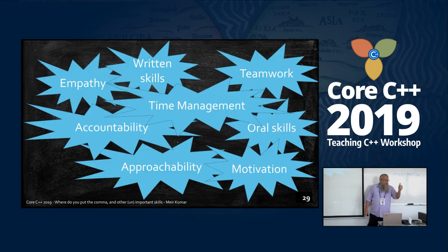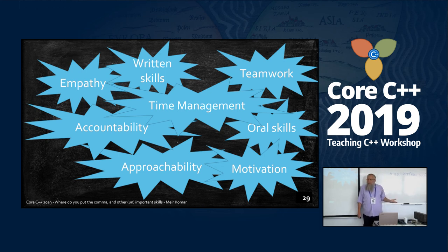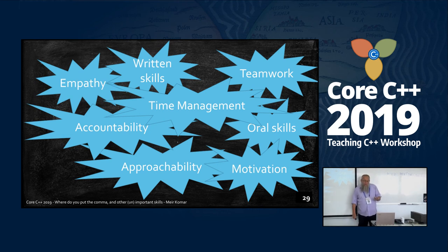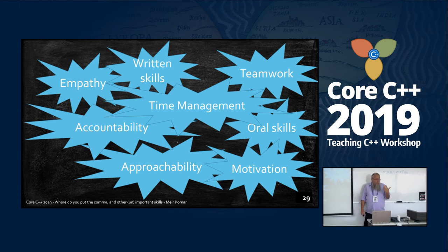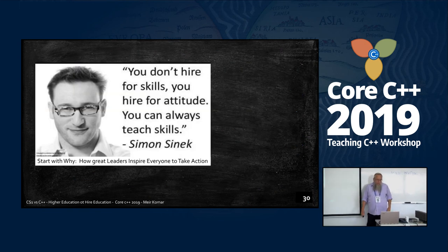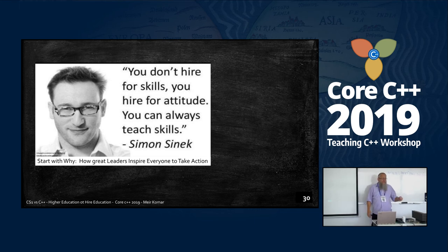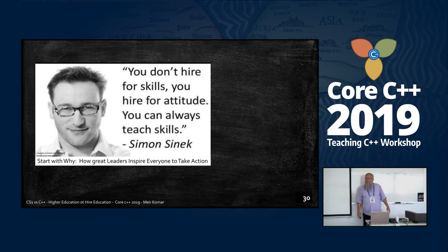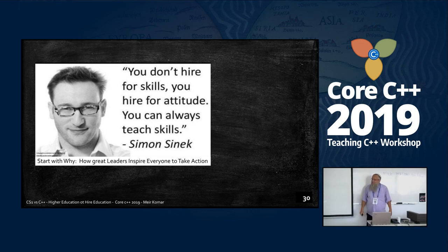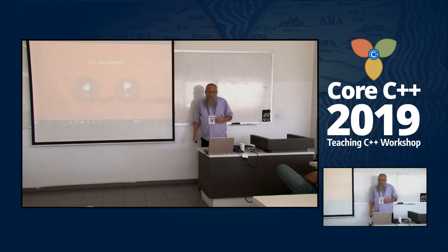Let's sum up very quickly. Time management, written skills, oral skills, empathy, teamwork — a lot of those things were mentioned in Karen's talk. Approachability, accountability — you do a code review, own up to your mistakes. Motivation is a very big issue. You don't hire for skills, you hire for attitude. You can always teach skills. This is one of the key questions with recruiters.